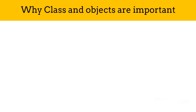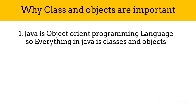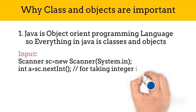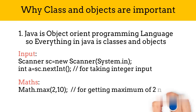Let's understand why classes and objects are important in Java. Java is an object-oriented programming language, so everything in Java is classes or objects and you need classes and objects to perform operations. Many predefined classes and objects are available in Java which we can use for our own benefit. For example, if we want to take an input, we will use the Scanner class. If we want to use math functions, we will use the Math class. Similarly, depending upon our need, we can use the predefined classes in Java. That's it for today's video.